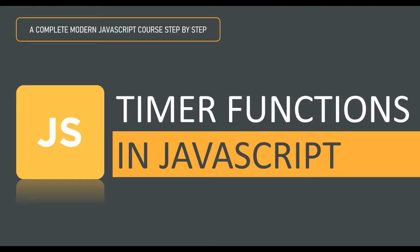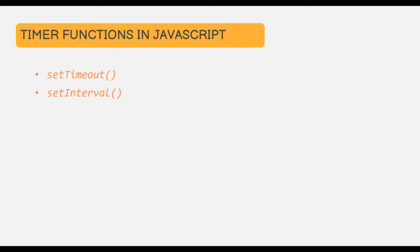In this lecture, we are going to learn about timer functions in JavaScript. In JavaScript, we have two timer functions: setTimeout and setInterval. Both of these timer functions are available on the Window object as its methods. Let's talk about each of these two timer functions one by one and how we can use them.